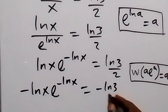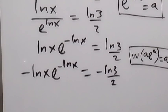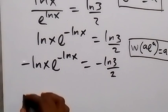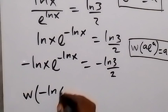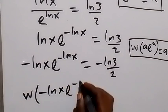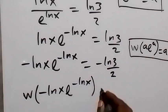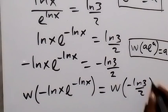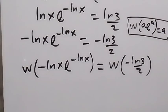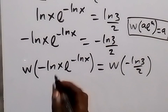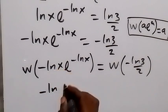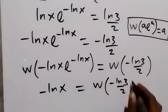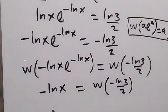The right-hand side becomes minus ln(3)/2. Now we apply the Lambert W function to both sides. On the left, W of (minus ln(x)) · e^(minus ln(x)) simplifies to minus ln(x). So minus ln(x) equals W of minus ln(3)/2.